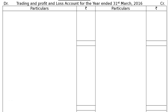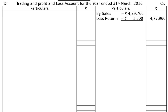There is no major adjustment in this question, so we start from the credit side. By sales: rupees 4,79,760 less returns rupees 1,800, giving a net figure of rupees 4,77,960 in the final column. By closing stock: rupees 15,270 — being an adjustment, it will be shown under current assets in the balance sheet.